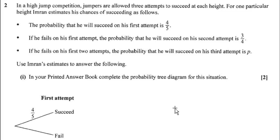Question two says that in a high jump competition, jumpers are allowed three attempts. The probability that Imran succeeds on his first attempt is 4/5, so we've got that here on the tree diagram.